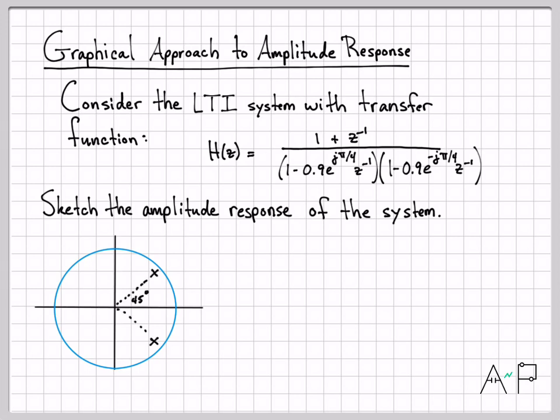Here are the poles. They are at 0.9 away from the origin. So they're not quite to the unit circle, which is this blue circle right there. And they are at an angle of 45 degrees and minus 45 degrees.